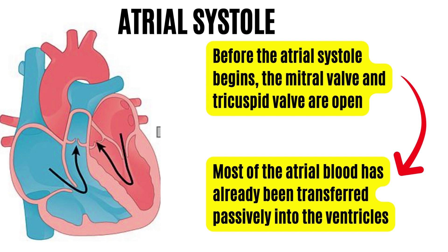Atrial systole lasts about 0.1 seconds. Even before atrial systole begins, the mitral valve and tricuspid valve are open and most of the atrial blood has already been transferred passively into the ventricles. Therefore, atrial systole actually contributes only about 30% of ventricular filling. Regurgitation of blood into the veins is prevented by narrowing of the venous orifices due to contraction of the atrial muscle. As atrial systole lasts only 0.1 seconds, the remaining 0.7 seconds the atria remains in diastole.